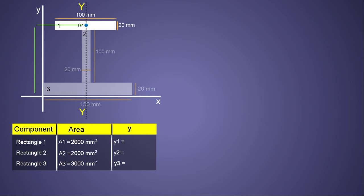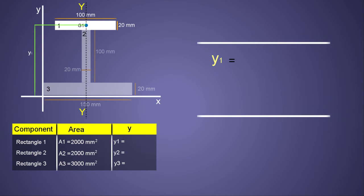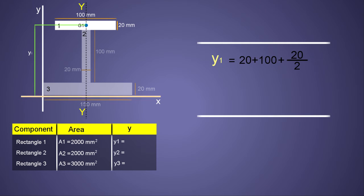y1 equals the height of rectangle 3 (20 mm) plus the height of rectangle 2 (100 mm) plus half the height of rectangle 1 (20/2 = 10 mm). We must include all these heights because we are measuring from the bottom X axis up to centroid G1. Therefore y1 = 20 + 100 + 10 = 130 mm. We tabulate this value.